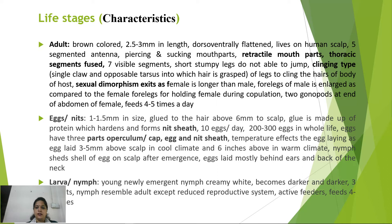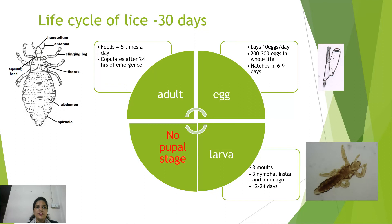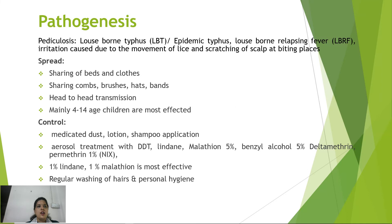Louse eggs have three parts: the operculum (cap), the egg, and the nit sheath. Temperature affects egg placement — laid closer to the scalp in cooler climates and about six inches above the scalp in warm climates. Nymphs are creamy white at emergence, darkening over three nymphal instars that resemble adults except for a reduced reproductive system. All stages are active feeders. The life cycle takes 30 days; nymphs copulate 24 hours after emergence and lay nits, with the imago emerging in 12–24 days from the third nymphal instar.